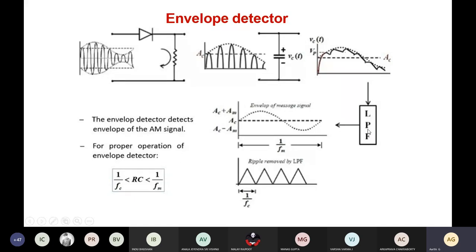At the output of the low pass filter, the ripples — which are nothing but the carrier frequency — are removed. Inside the envelope of the AM signal, we have the carrier frequency, which is the carrier signal. These ripples at the carrier frequency are removed at the output of the low pass filter. We then have the envelope of the message signal, whose amplitude varies between AC + AM and AC − AM.